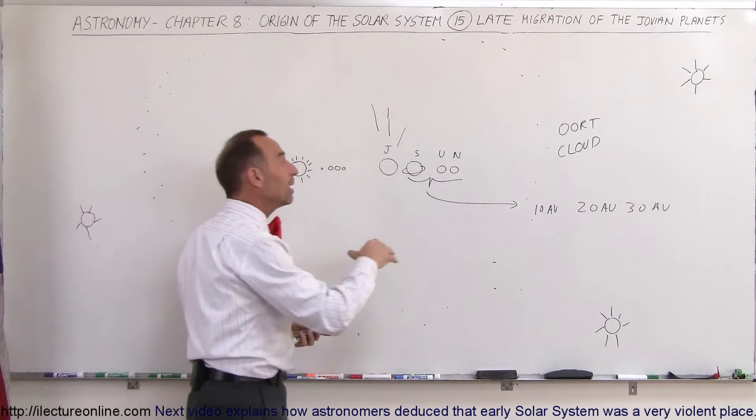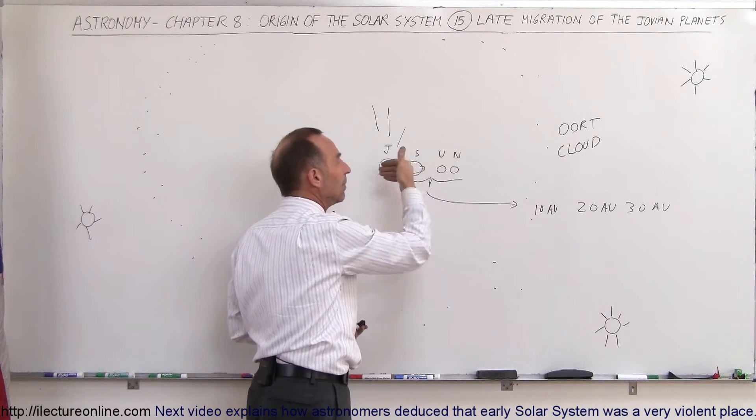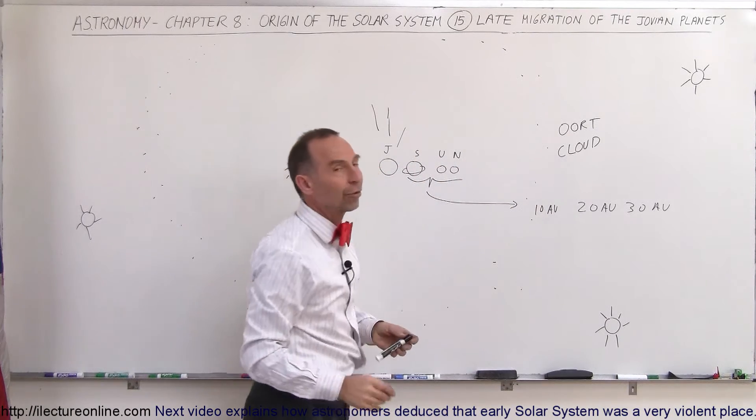And so it's believed that a lot of the material that was in the far reach of the solar system got kicked to the inner end of the solar system, and therefore moving those planets further out.